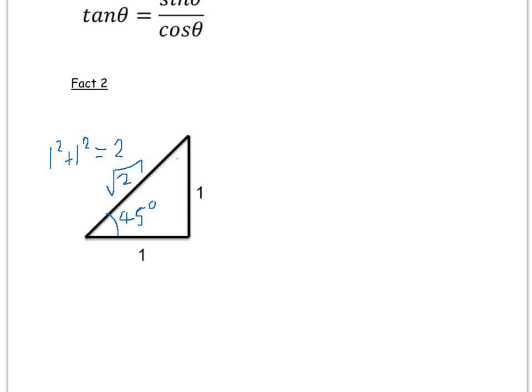So now, we can use this to help us find out what sin of 45 is equal to, we can use it to find what cos of 45 is equal to, and what tan of 45 is equal to. So, sin of 45 is equal to opposite over hypotenuse, so it's 1 over the square root of 2. Cos of 45 is equal to the adjacent 1 over root of 2, again. But tan of 45 is the opposite 1 divided by the adjacent 1, which is 1.